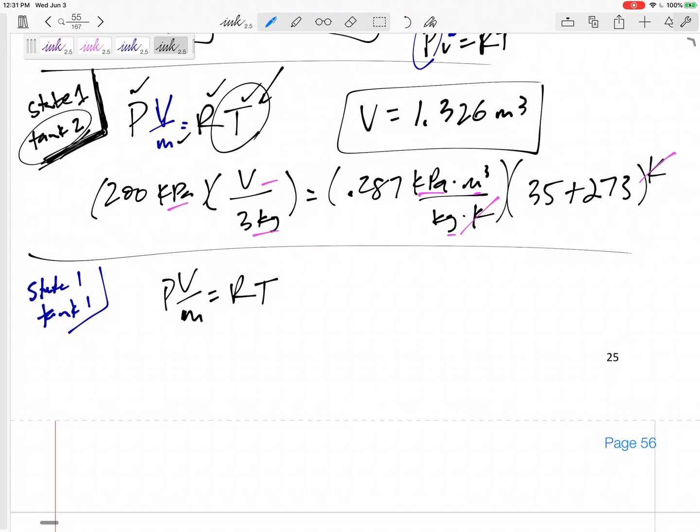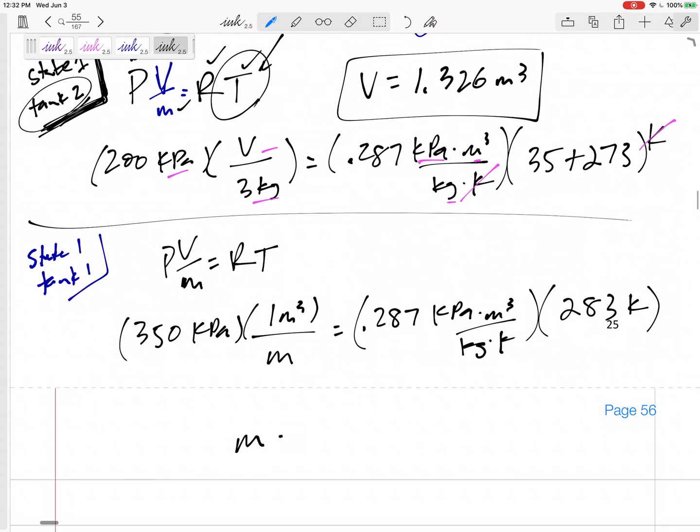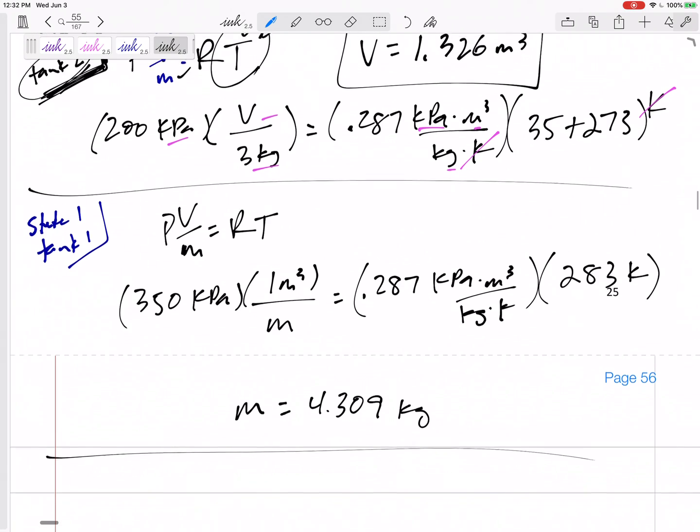All right, so state one tank one, the pressure was 350 kPa. The volume was 1 m³. The mass M is what I'm looking for, equals 0.287 kPa·m³/kg·K times the temperature, it was 10° plus 273, so 283 K. Everything works out. The mass, 4.309 kg. That's just tank one initially.